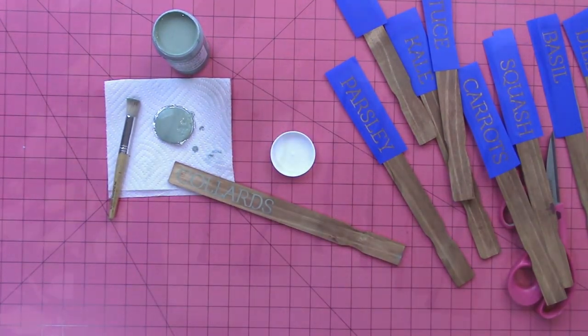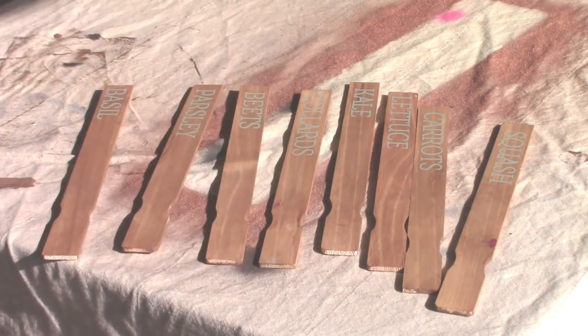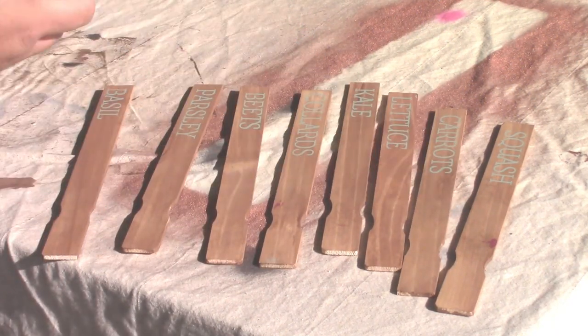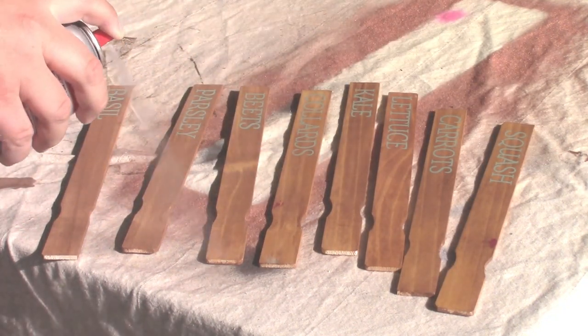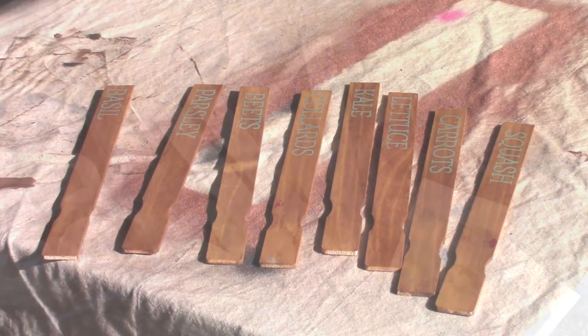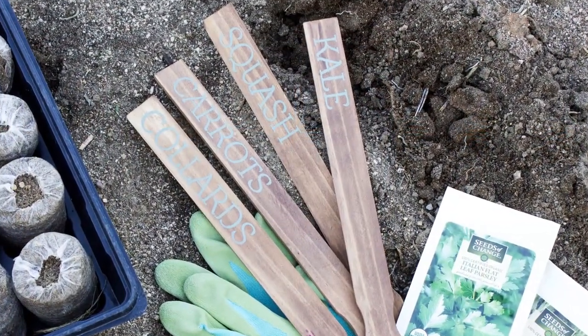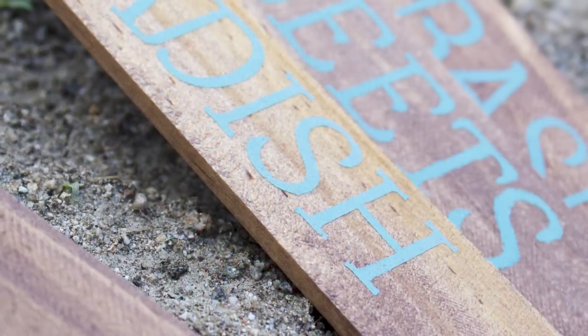I peeled off the vinyl and then let those dry. Once they were dry, I used some spray Thompson's all-purpose water sealer to seal these again, because the stained part is going to be fine but the painted part is not sealed. Just a light spray with that, let that dry for a few hours, and these are ready to go. You can check the waterproofing by putting some water on them to see if the water beads up.